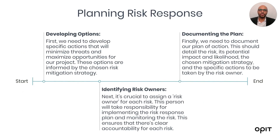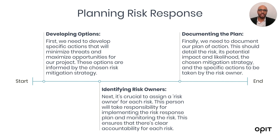After deciding on our mitigation strategies, we enter the stage of planning risk response. First, we need to develop specific actions that will minimize threats and maximize opportunities for our project — these options are informed by the chosen risk mitigation strategy. Then we identify risk owners. It's crucial to assign a risk owner for each risk. This person will take responsibility for implementing the risk response plan and monitoring the risk, ensuring clear accountability for each risk.